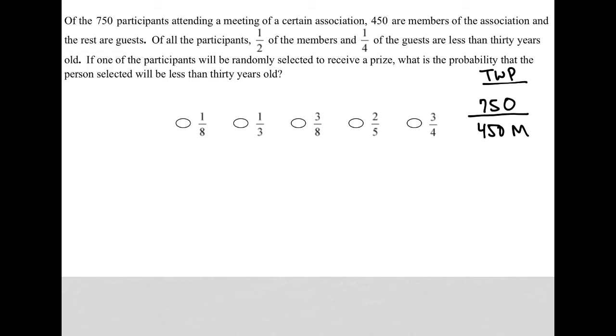I can do the math there and see what that means - there must be 300 guests, right? Because we want to add up to 750. Of all the participants,